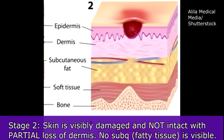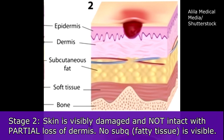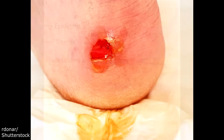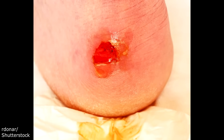Stage two: the skin is visibly damaged and not intact, with partial loss of the dermis. The injury extends down to the dermis but will not extend into the subcutaneous fatty tissue — that will not be visible. The wound can appear as a superficial red or pink open ulcer, or it may have the formation of an open or closed blister. Here is an example of what a stage two pressure injury looks like.